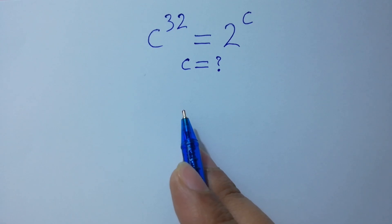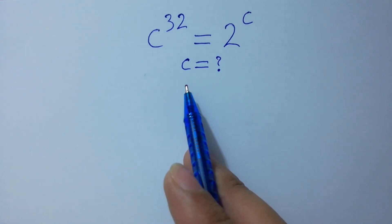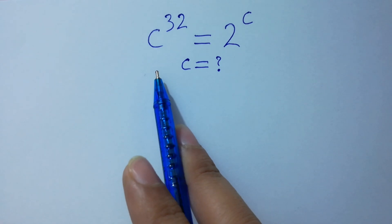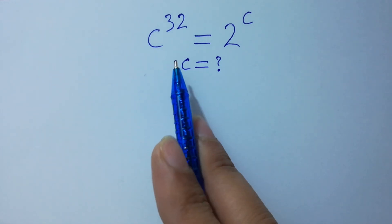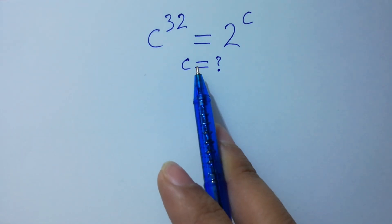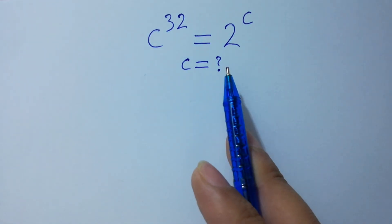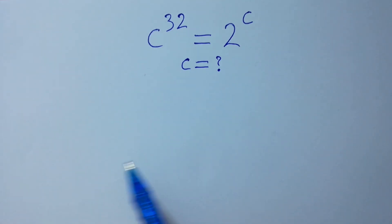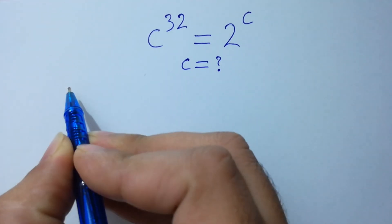Hello friends. Find the value of C if C to the power 32 equals 2 to the power C. Let's have a solution.